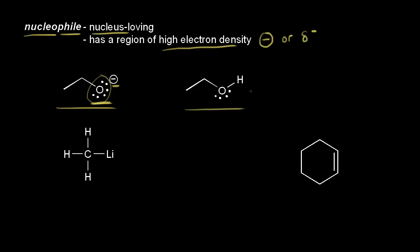Next let's look at ethanol. Ethanol doesn't have a full negative charge, but we know that oxygen is more electronegative than hydrogen, so oxygen is going to pull the electrons in this bond closer to itself, giving it a partial negative charge. So this oxygen is the nucleophilic center of ethanol. The ethoxide anion is going to be a better nucleophile than ethanol because it has a full negative formal charge on the oxygen as opposed to only a partial negative.